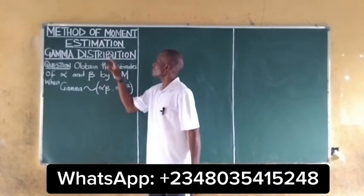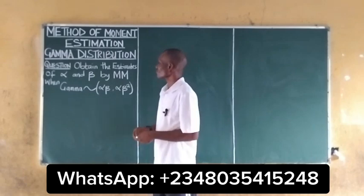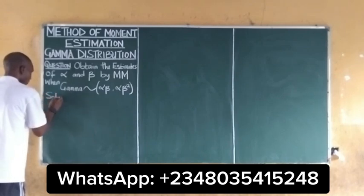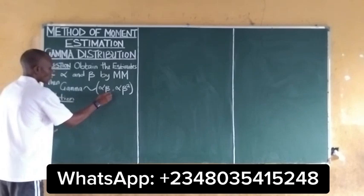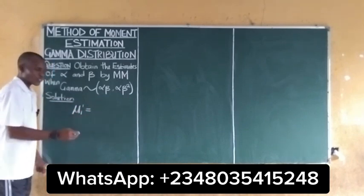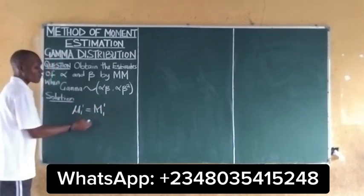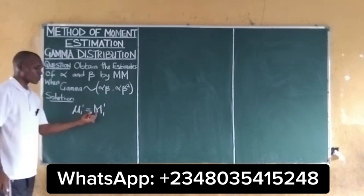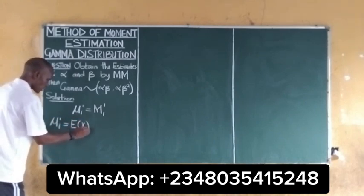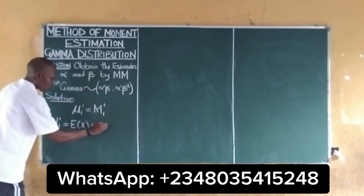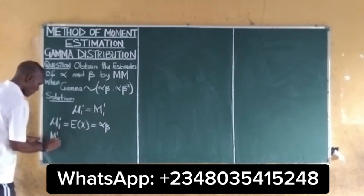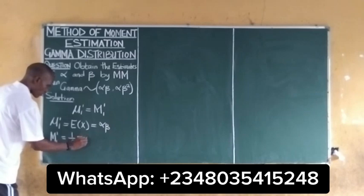In this video we shall be finding the method of moments for the gamma distribution. What is given here is the mean and the variance. For the method of moments, mu-one-prime, which is the population mean, is equal to the sample mean. The population mean for the gamma distribution is equal to the expected value of X, and the expected value of X is alpha times beta. The sample mean is equal to (1/n) times the summation of x_i.